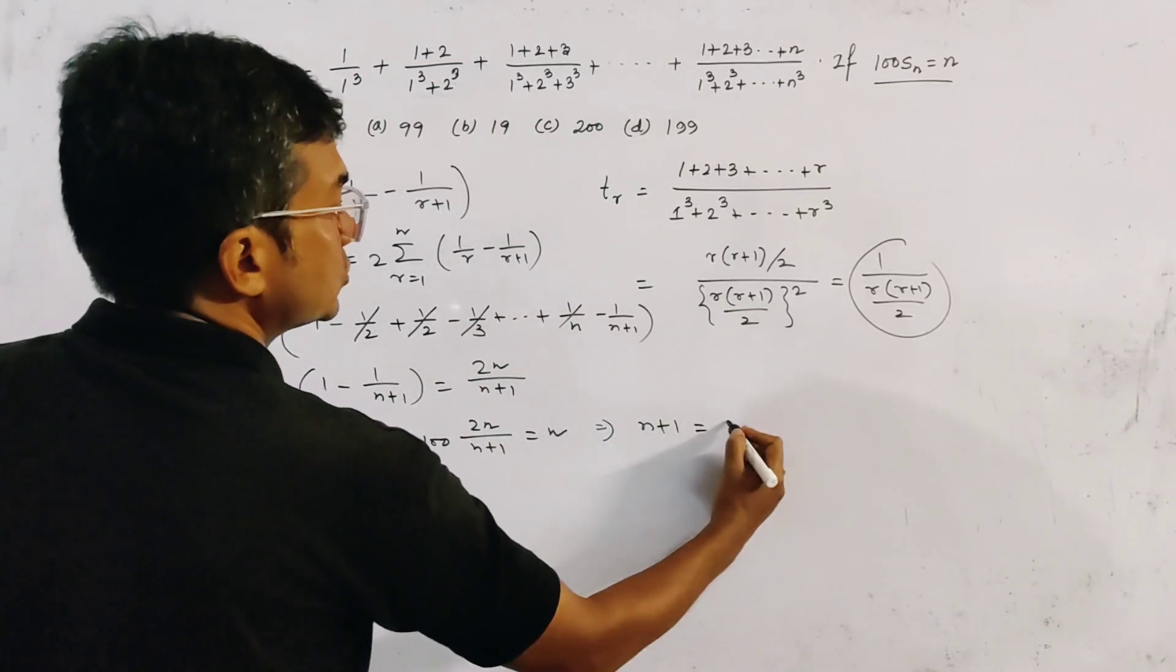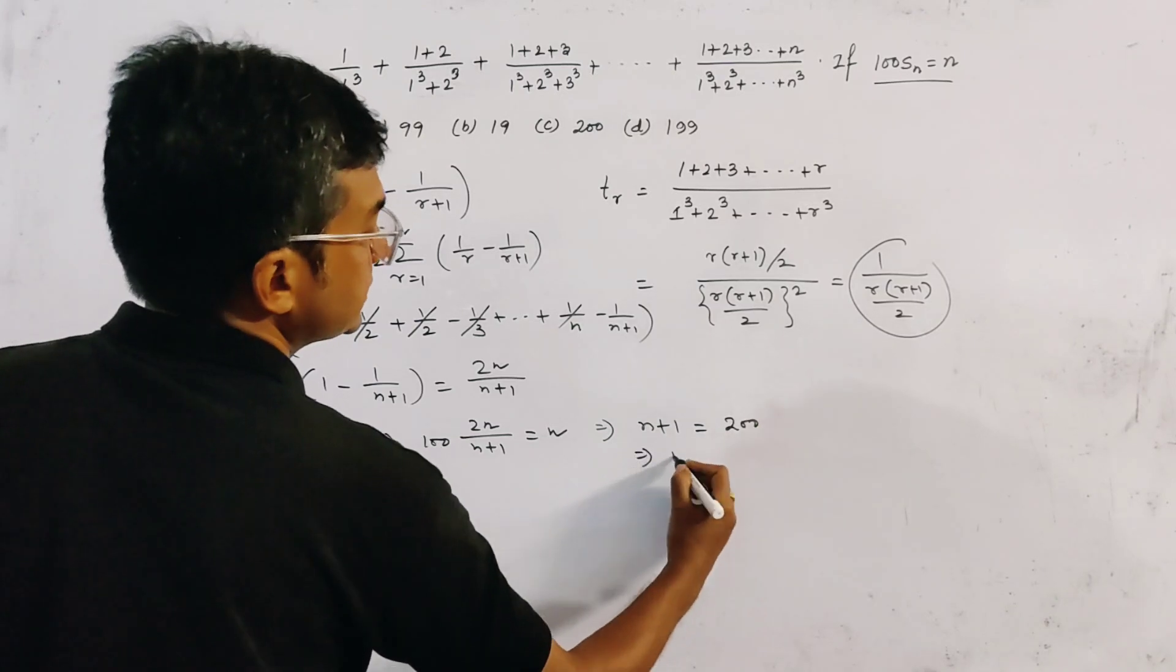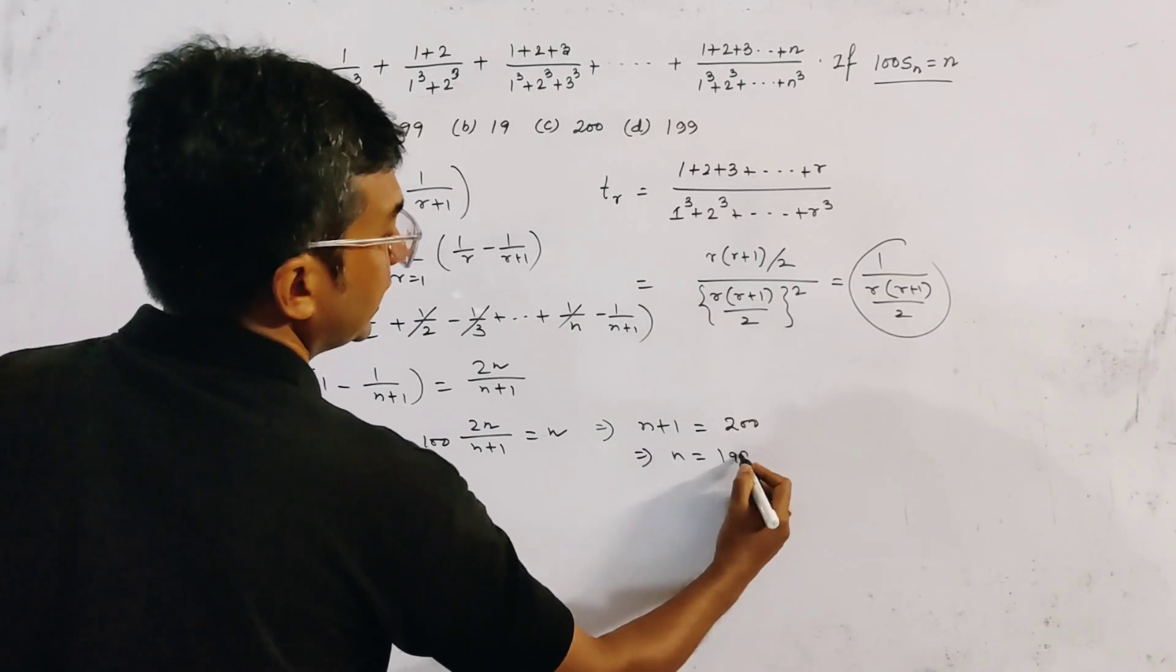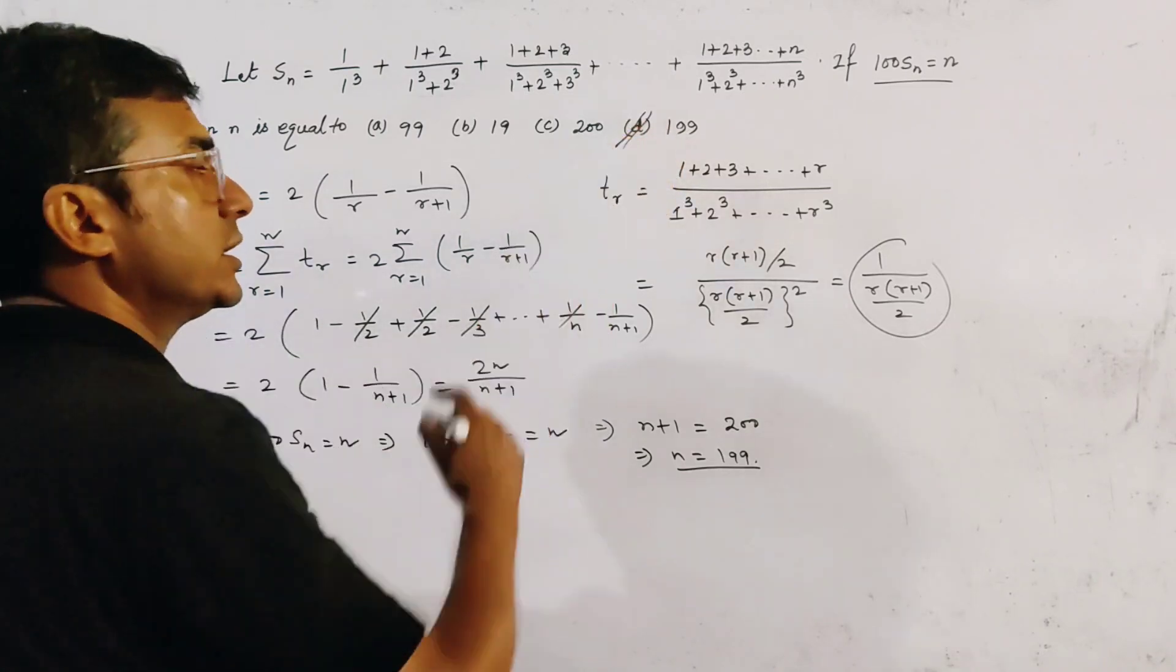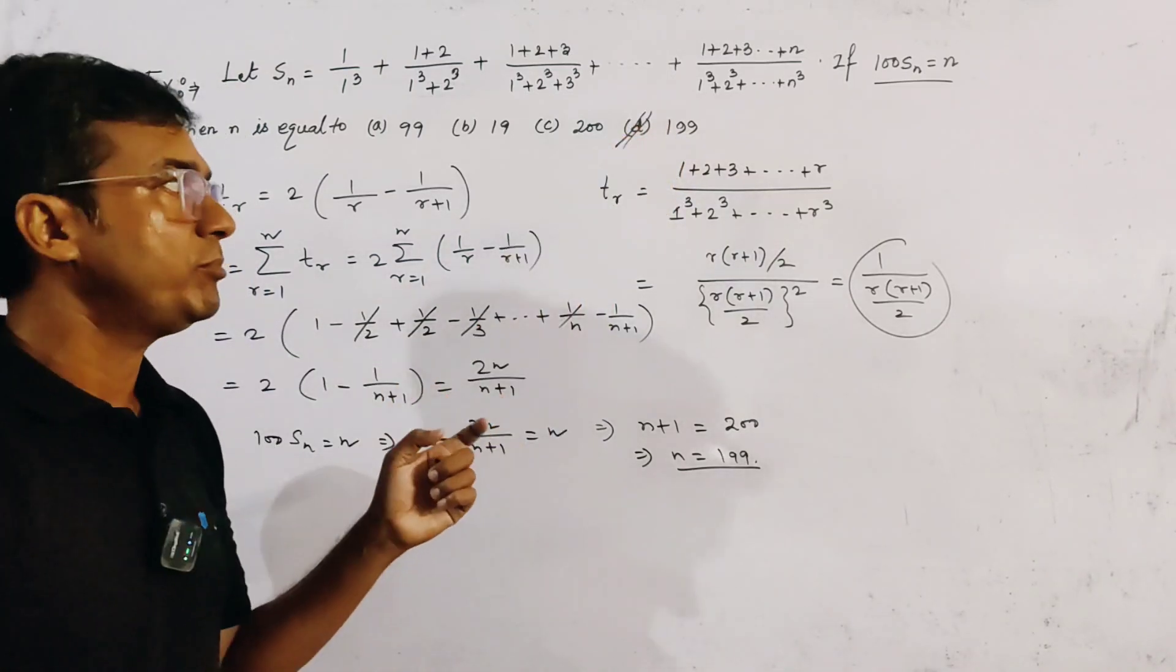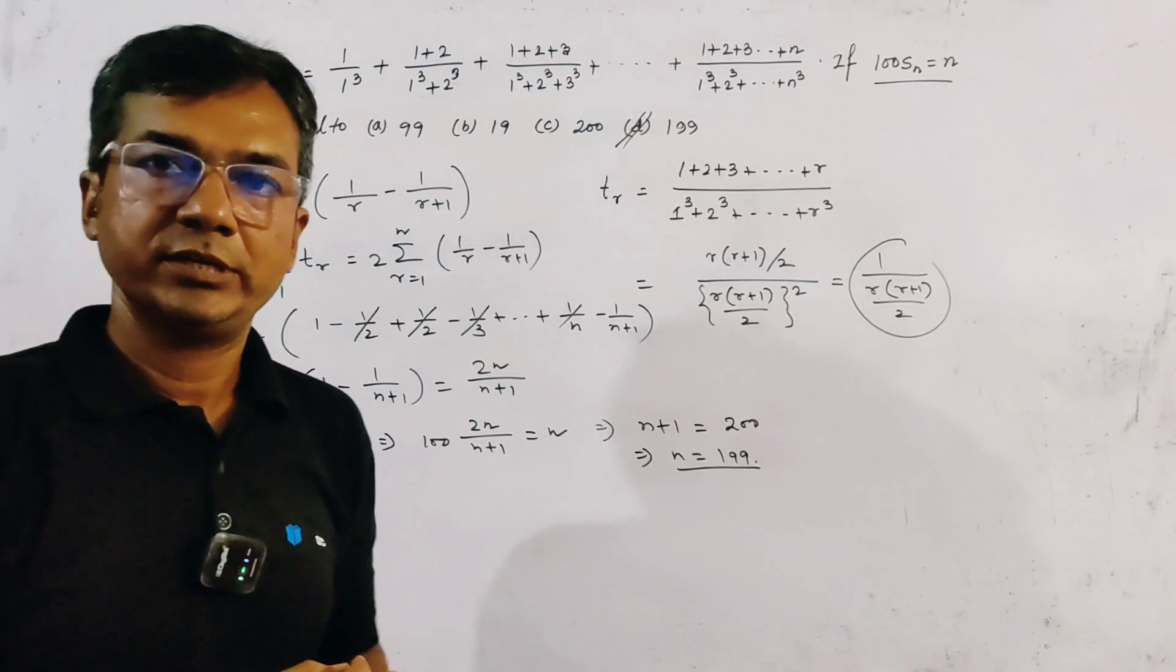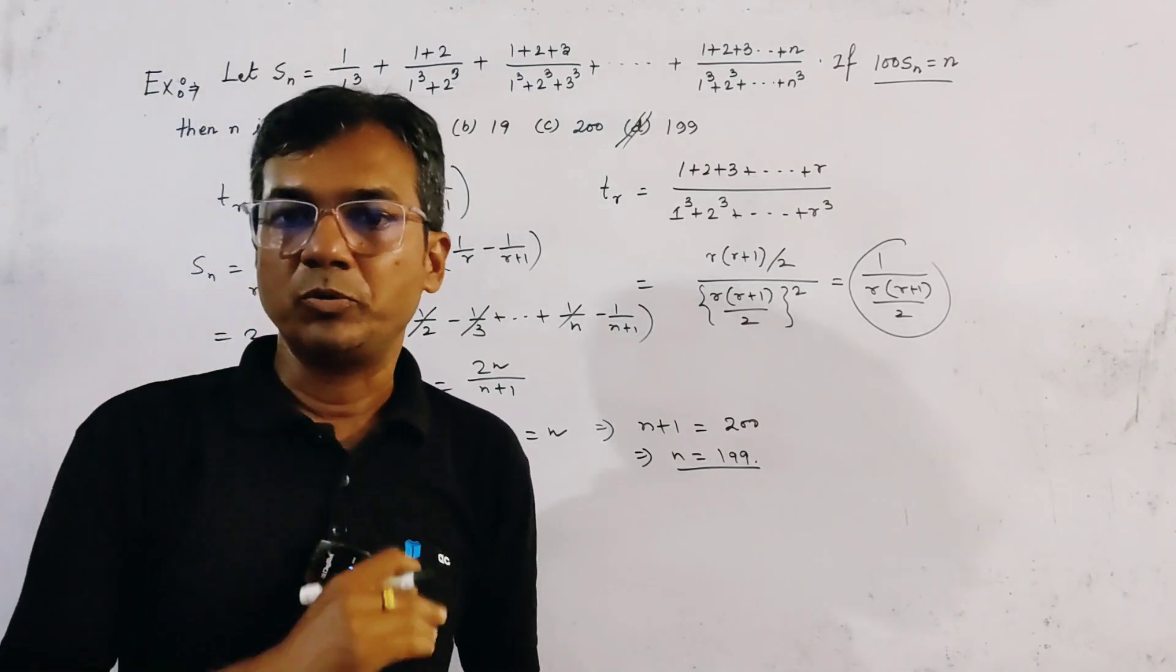This gives n+1 equals 200, that is n equals 199. Option 4 is the right option. Very interesting problem of arithmetic progression. Thank you for watching.